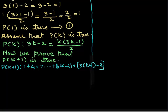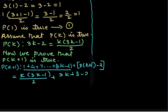From 1 to 3k minus 2 we have k(3k - 1) over 2, plus 3k plus 3 minus 2. So it will be 3k minus 2 plus 3k plus 1.